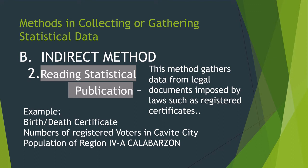The second indirect method is reading statistical publications. This method gathers data from legal documents imposed by the law, such as registered certificates. This requires the participation of a large or an entire population. For example, birth and death certificates, the number of registered voters in Cavite City, or the population of Region 4A Calabarzon.